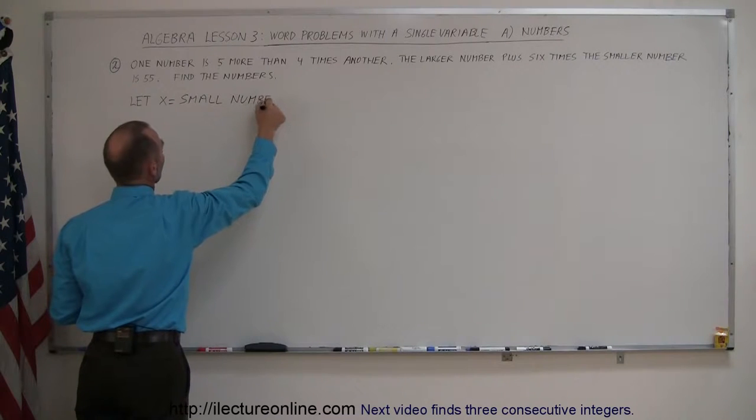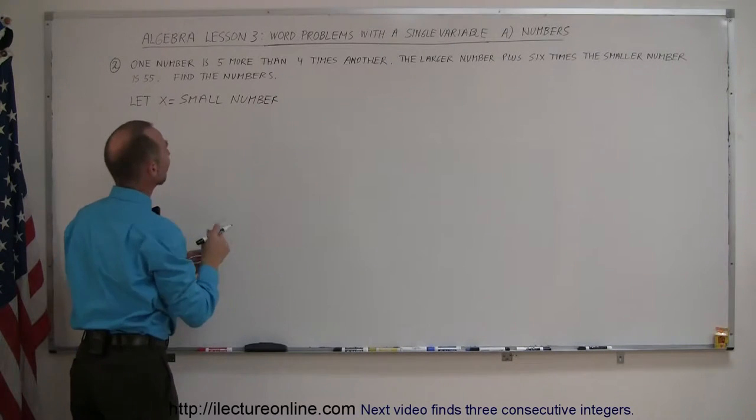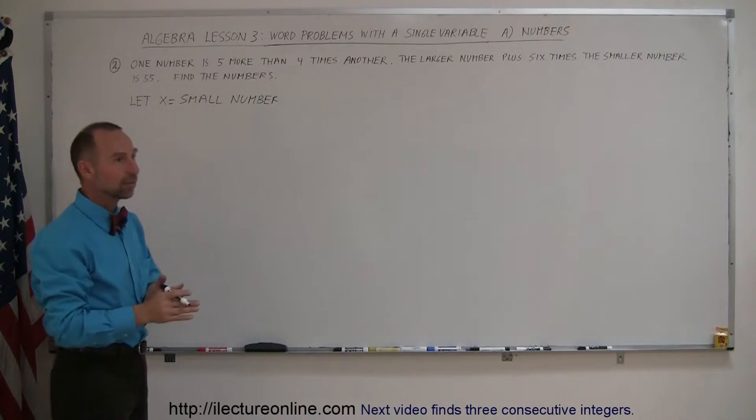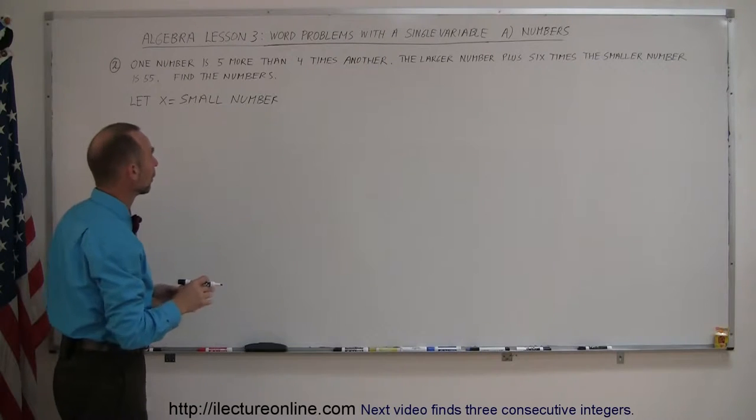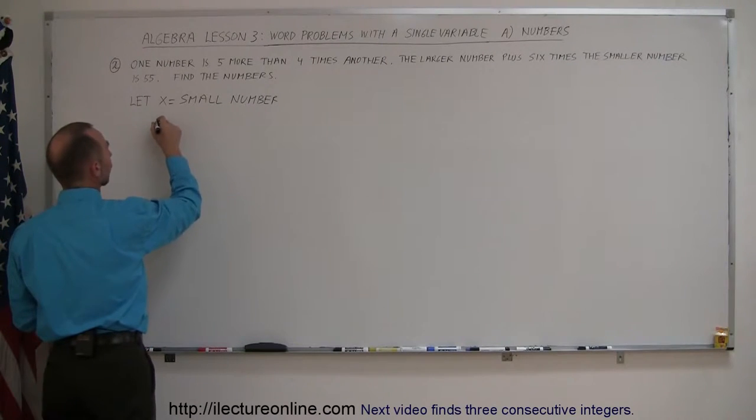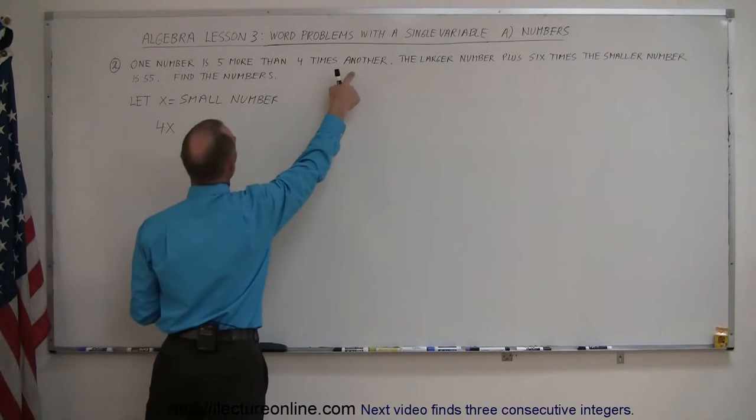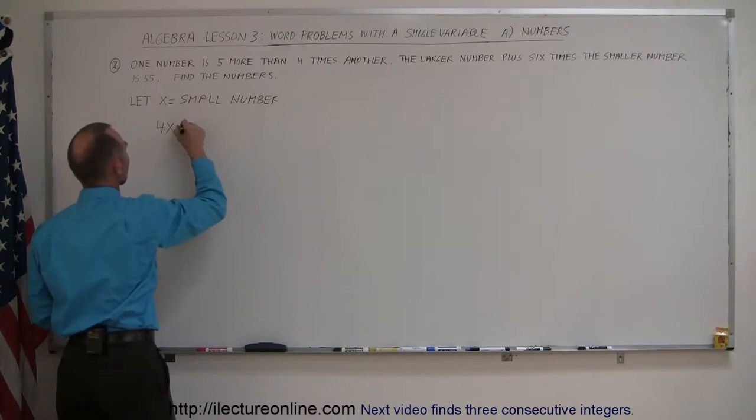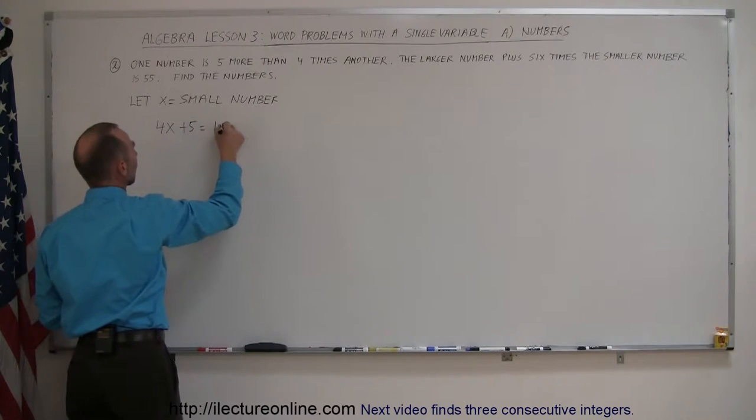And then the large number, according to the problem, is five more than four times the small number. So four times x, four times the small number, plus five. That equals the large number.